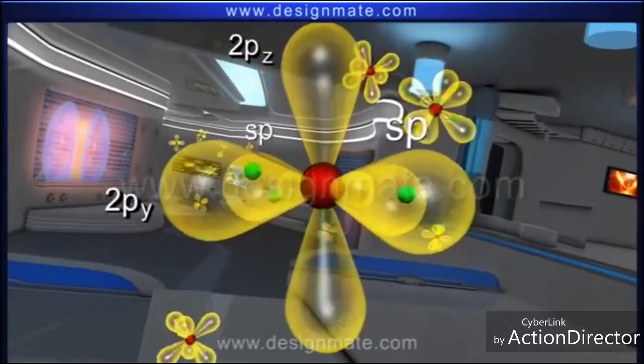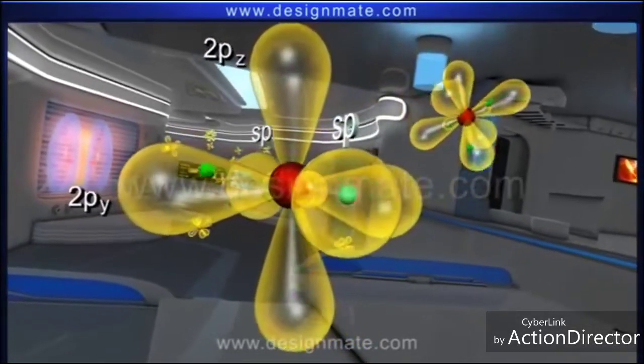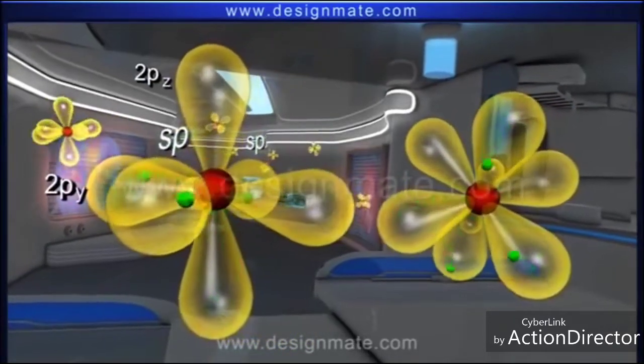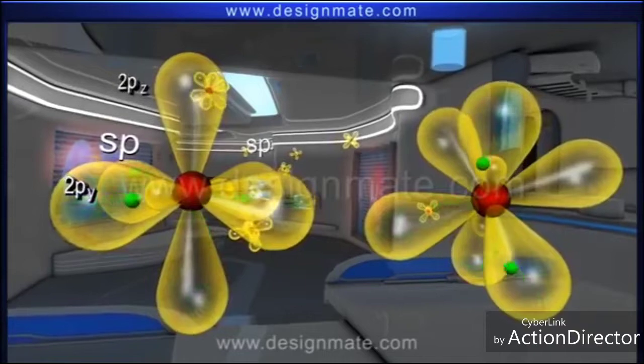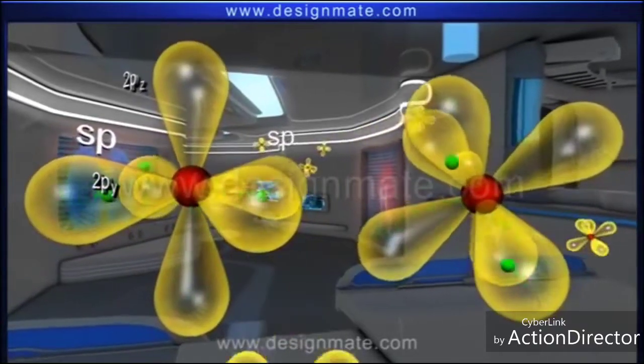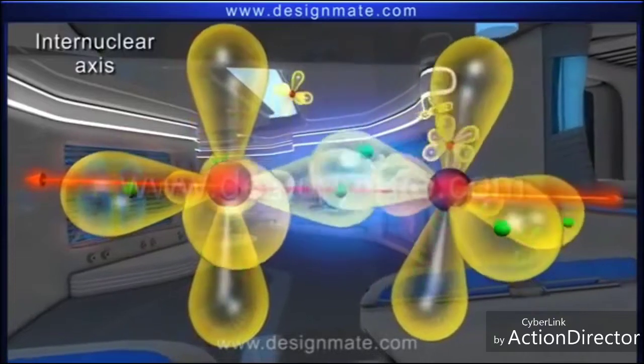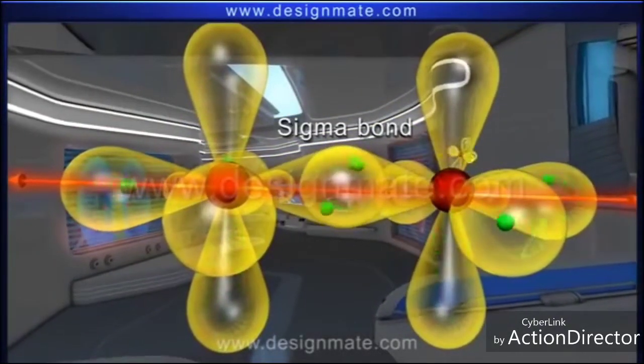Imagine another sp hybridized carbon atom approaching this carbon atom such that the sp hybrid orbitals of the two carbon atoms face each other. These orbitals overlap along the internuclear axis, resulting in a sigma bond.